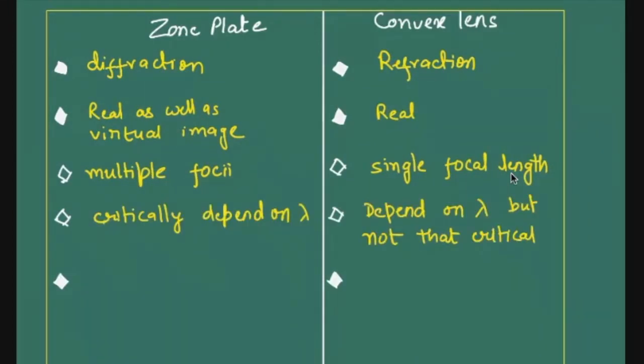When we talk about structure, here you will see that in zone plate, it's a flat plate. So it is not having any curvature. Whereas, lens has a different curvature at different position of lens.